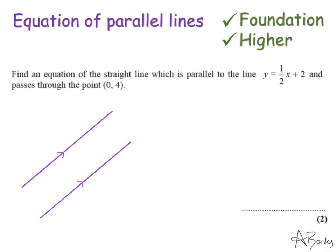So this question says, find an equation of the straight line which is parallel to the line y equals a half x plus 2 and passes through the point 0, 4. So the first thing I can say is that the gradient of this line they're asking me to find must be a half because it's parallel to this line here and this line has a gradient of a half. So my equation is going to say y equals a half x and then I just need to find what c is but they've told me here that it passes through the point 0, 4.